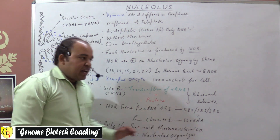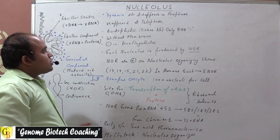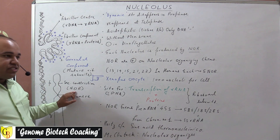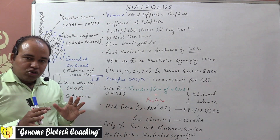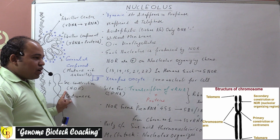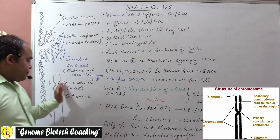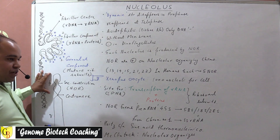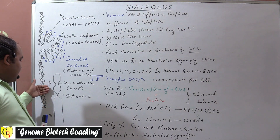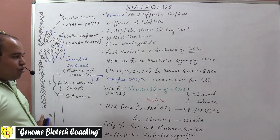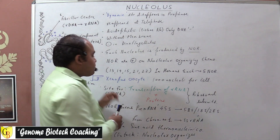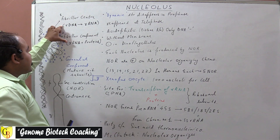It was Heitz who first called the nuclear organizing regions as 'sine acido thermonucleinico,' whereas Barbara McClintock called them nuclear organizers. Later, it was Fontana who first gave the name nucleolus. Nucleolus organizing regions can be recognized over chromosomes as specialized secondary constrictions. In a chromosome, the small arm is referred to as P (petite arm, meaning small) and the larger arm is referred to as Q by conventional notation.